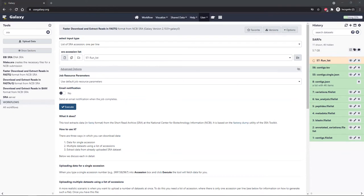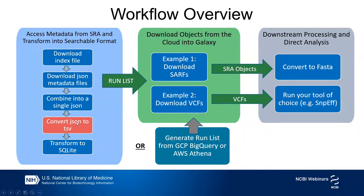One other thing: you can query this metadata directly in the cloud instead of doing all these Galaxy steps. We've been converting JSON to TSV and then to SQLite, but you could do this in BigQuery or Athena — the metadata is already there and ready to query. Just query it there, get a list of runs, and use that list to start directly at the next import step in Galaxy. We've got a couple of minutes while the current process completes, so I'll show you a couple of examples.